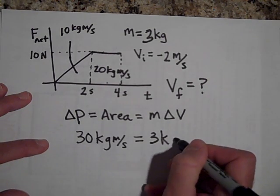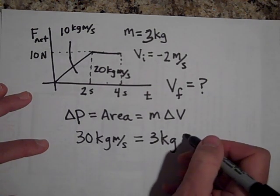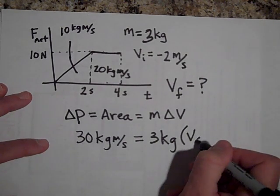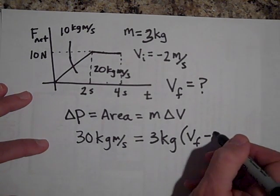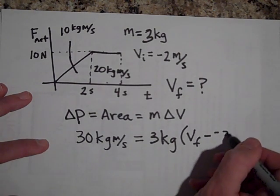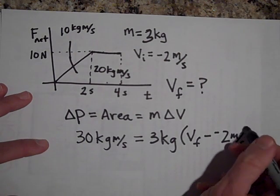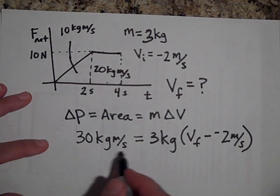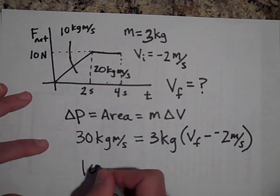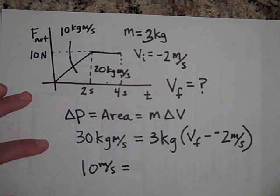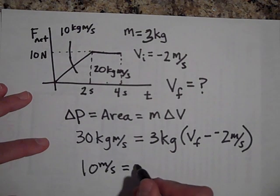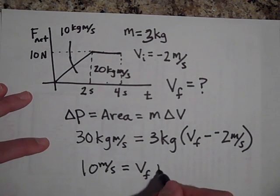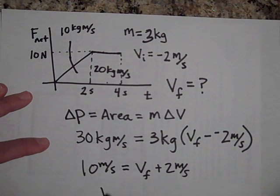That area of 30 newton-seconds equals three kilograms times delta V, where delta V is V final minus V initial, which is V final minus negative two meters per second. Dividing by three gives 10 meters per second equals V final plus two, so V final equals eight meters per second.